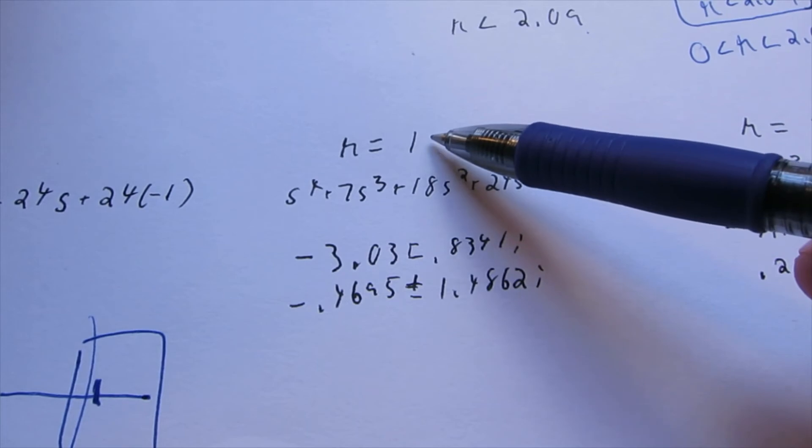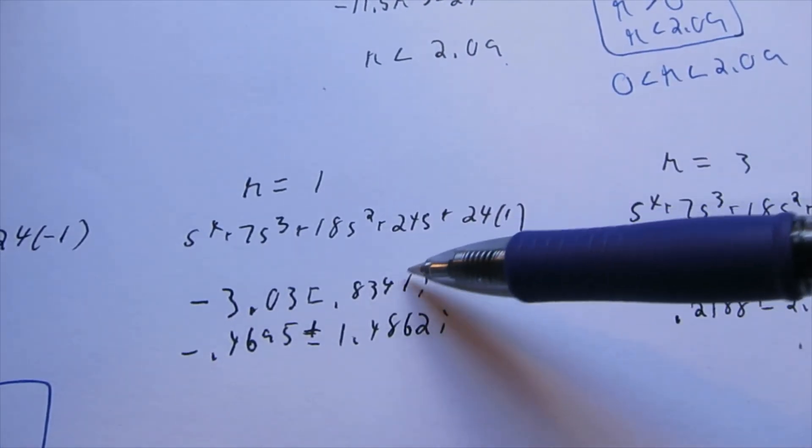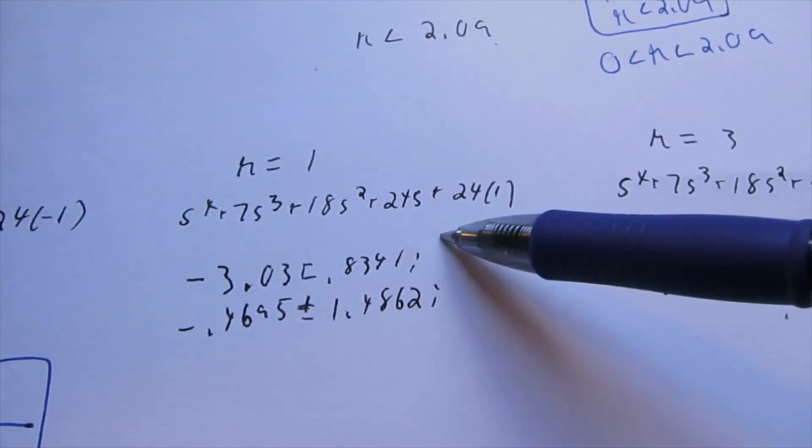Now, we have K equals 1. So, this, we know from our calculations that this should be stable. Plug this in. We get two negative roots. That's good. They're imaginary, but that's okay.